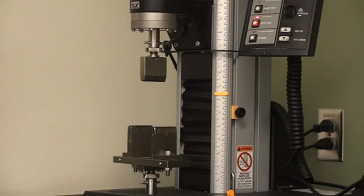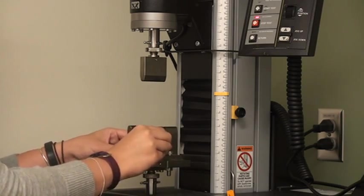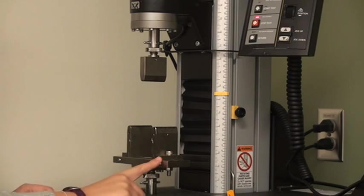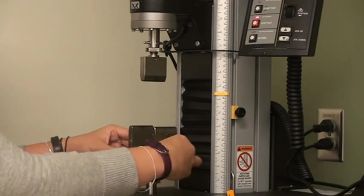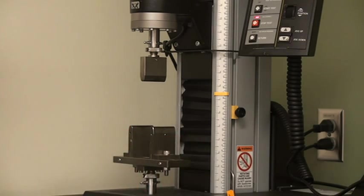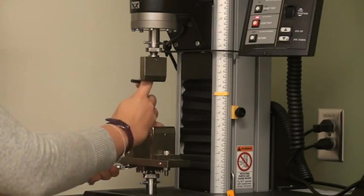Once these are loose, the anvils will be able to move freely along the assembly. Use the markings on the anvils and the ruler on the front of the assembly to move the anvils to the desired position, and then re-tighten the bolts using the wrench and the six millimeter hex key.